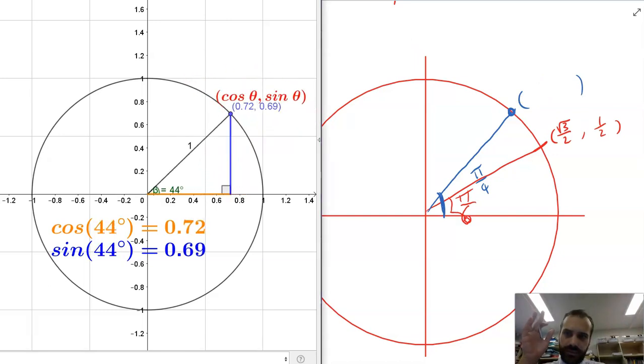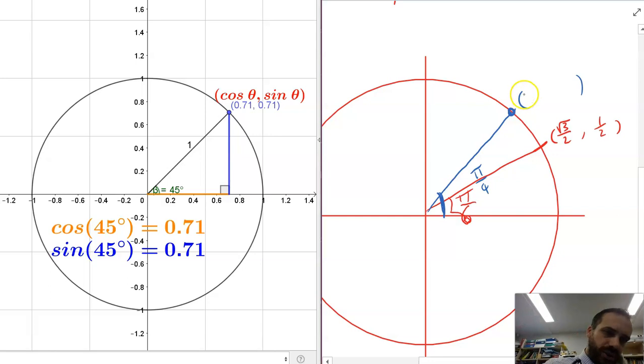Moving to 45—it's 0.71, 0.71 approximately. That's just rounded. That is cos(π/4), which is √2/2.